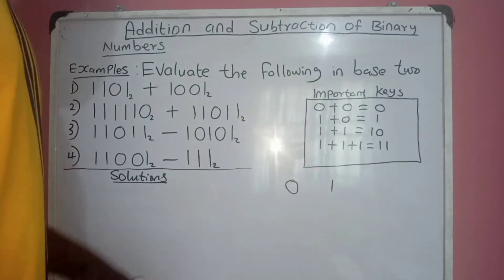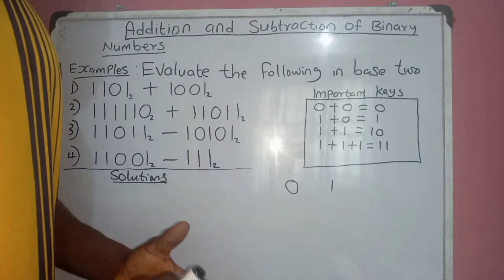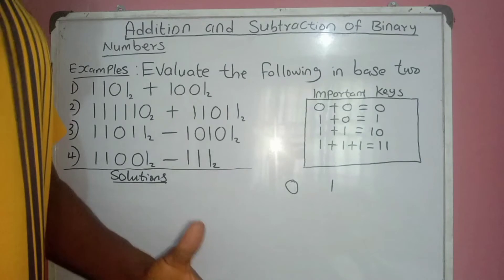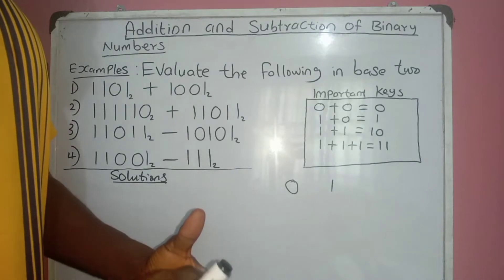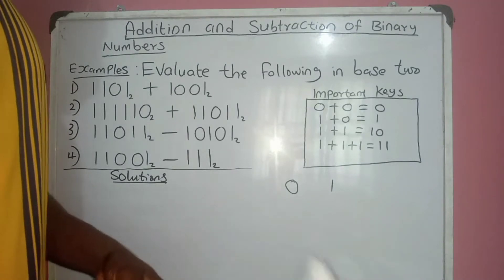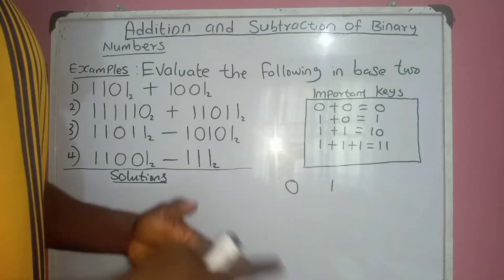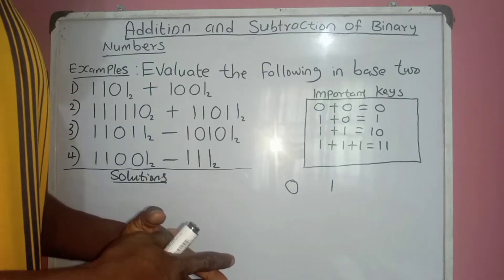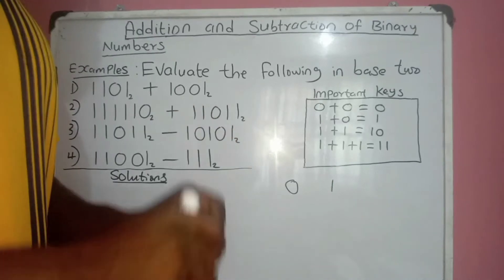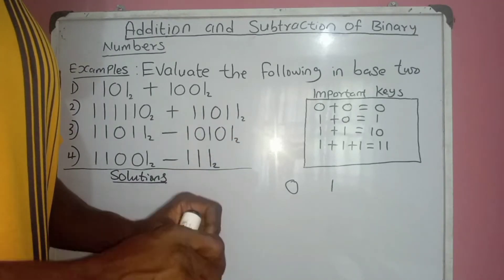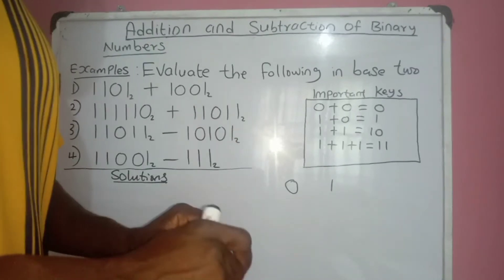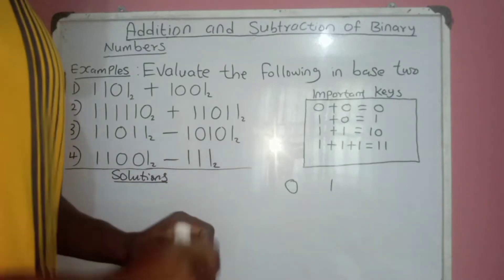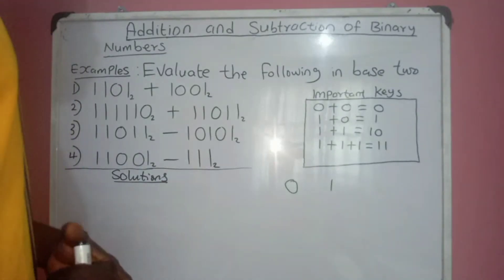As we explained in our previous video, the highest digit you can find in base 3 is 2, in base 4 is 3. So the highest digit you can find in any base is always 1 less than the base number in question.